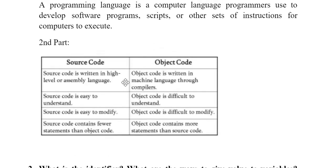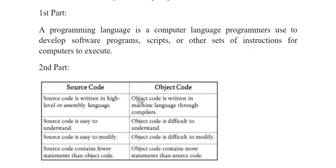Source code is written by the programmer and can be high-level or assembly-level language. Object code is generated when a compiler compiles the source code, and it is written in machine language, making it difficult to understand. Source code is easy to modify, but object code is very difficult to modify. Source code contains fewer statements than object code. Four differences are enough for two marks.